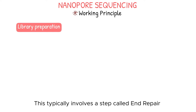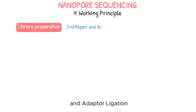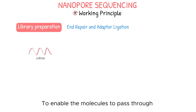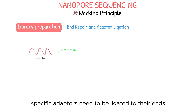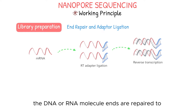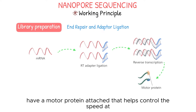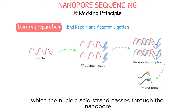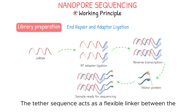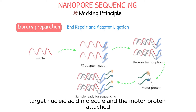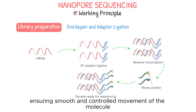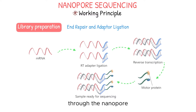Library preparation. This typically involves a step called end-repair and adapter ligation. To enable the molecules to pass through the nanopores and be sequenced, specific adapters need to be ligated to their ends. Before ligation, the DNA or RNA molecule ends are repaired to create a uniform structure. The adapters, also called sequencing adapters, have a motor protein attached that helps control the speed at which the nucleic acid strand passes through the nanopore. The tether sequence acts as a flexible linker between the target nucleic acid molecule and the motor protein attached to the sequencing adapter, ensuring smooth and controlled movement of the molecule through the nanopore.